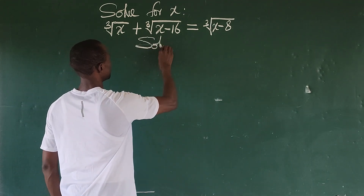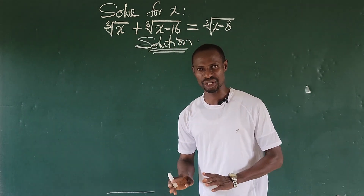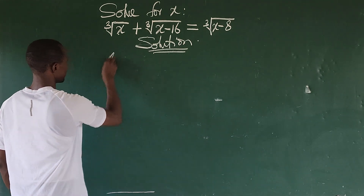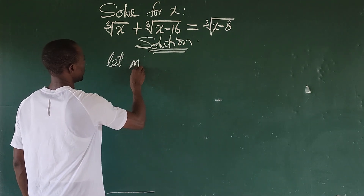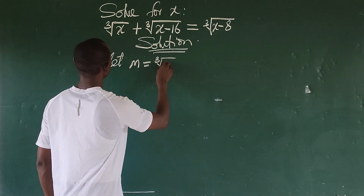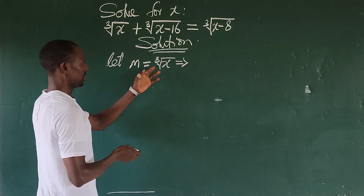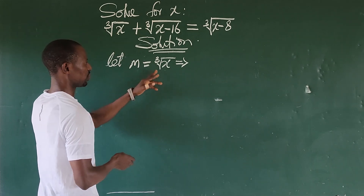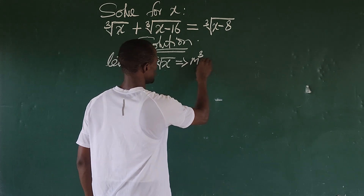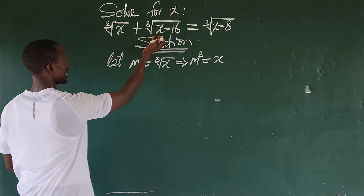We're going to do a simple substitution that will enable us to solve this challenge. Let m be equal to the cube root of x. Now, to make x the subject of the formula, we take the cube of both sides, which gives us m to the power of 3 is equal to x.